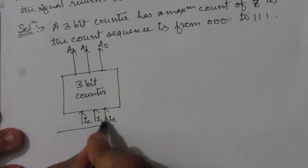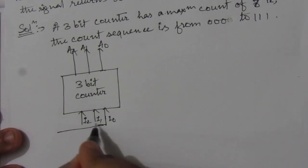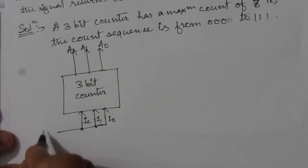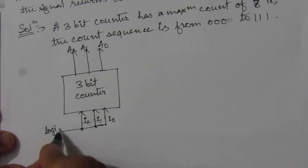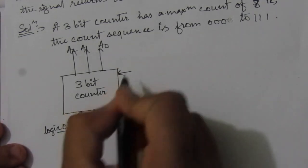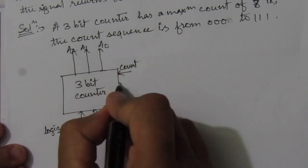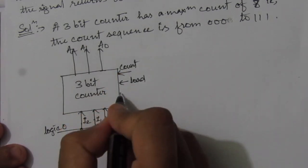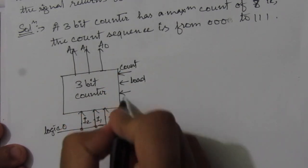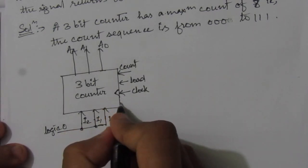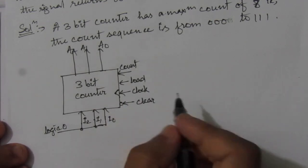Logic 0 is connected to all 3 inputs. The counter also has one count input, one load input, one clock input, and one active-low clear input.